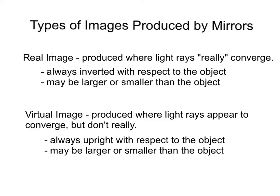Types of images produced by mirrors: the first type is called a real image, produced where light rays really converge. Real images are always inverted with respect to the object, and they may be larger or smaller depending on how far away the object is from the mirror relative to the center and focus. The second type is a virtual image, produced where light rays appear to converge but don't really. Virtual images are always upright with respect to the object, and may also be larger or smaller depending on how close the object is to the mirror.